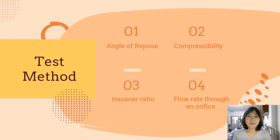Now we will move on to the powder flowability test. There are four ways to measure flowability: one, angle of repose; two, compressibility; three, Hausner ratio.